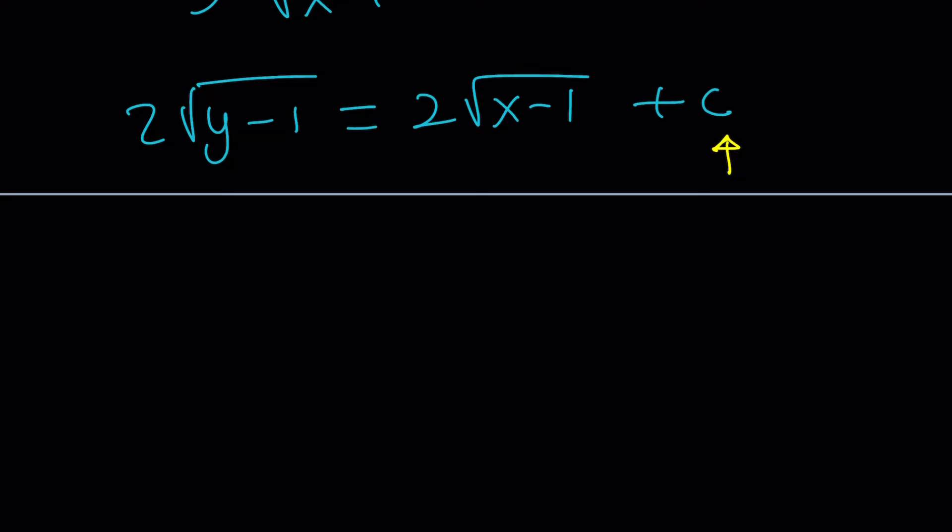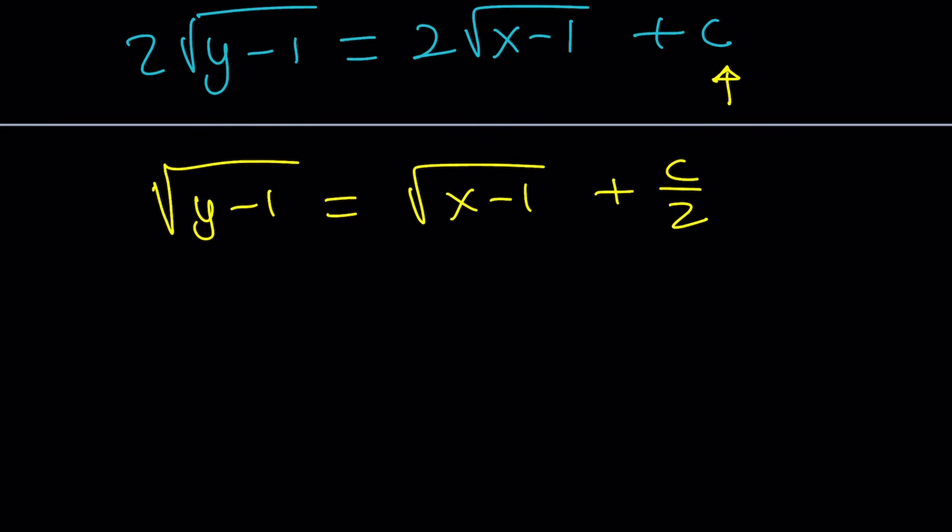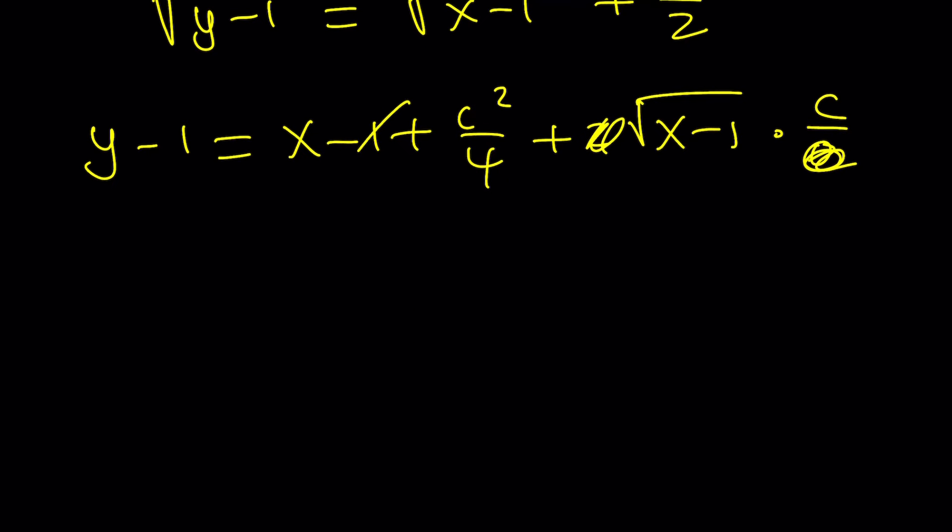I'm going to divide everything by 2, and then that's going to give us half of c, which is fine. And then we're going to square both sides. Shall we? Yeah, let's go ahead and do it. That's fun. Y minus 1. And the right-hand side, you're going to get the square of this, square the second term, and then plus 2 times this times that. 2's cancel out. We end up with something nice. And then the 1's cancel out. Then we get y equals x plus c times the square root of x minus 1 plus c squared divided by 4.